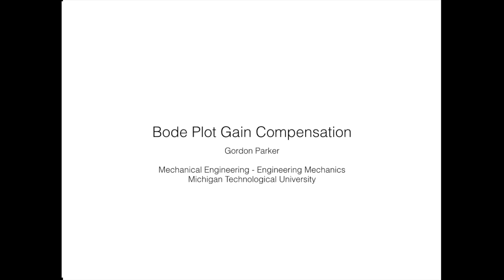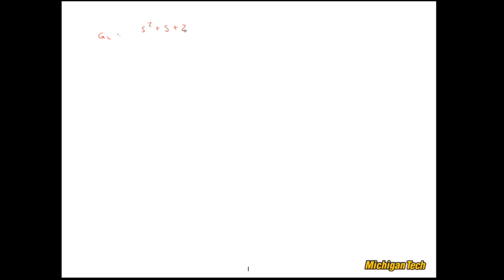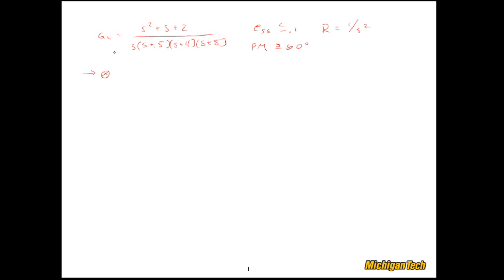Hi, this is Gordon Parker from Michigan Tech. In this video I'm going to go over an example of doing gain compensation using a Bode plot. Here's the loop transfer function that we'll be working with — we have a couple zeros and a handful of poles. Our design goals are to have the steady state error be less than 0.1 when the reference input is a unit ramp 1/s², and we'd like the phase margin to be greater than or equal to 60 degrees.